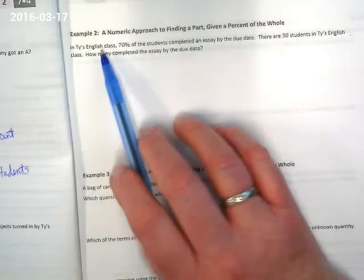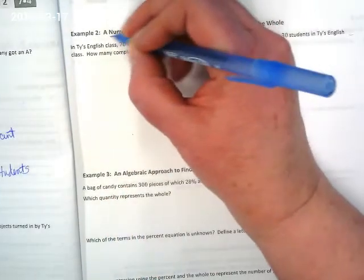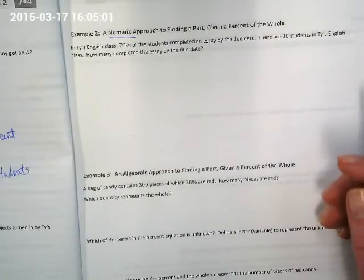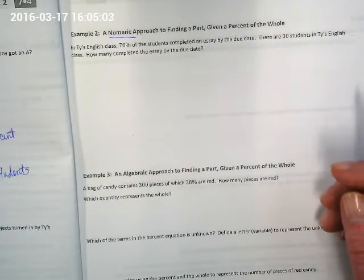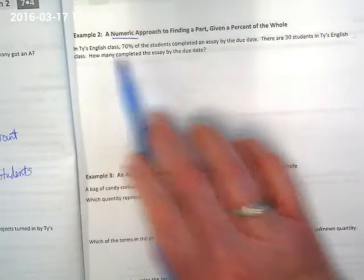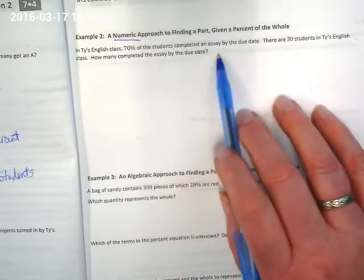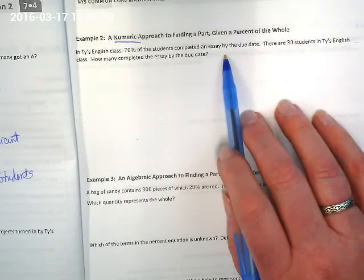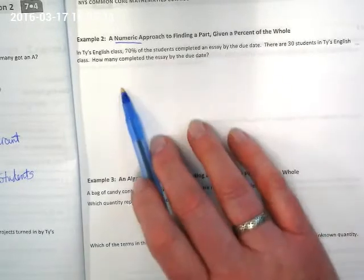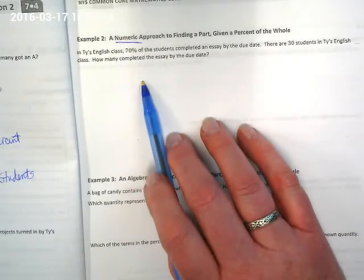Now we're going to move on to the next example, and this is using a numeric approach. In Thai's English class, 70% of the students completed an essay by the due date. There are 30 students in Thai's English class. How many completed the essay by the due date?